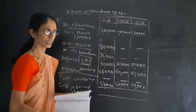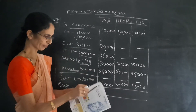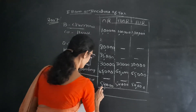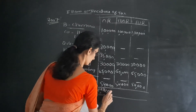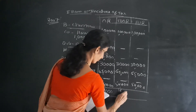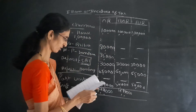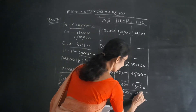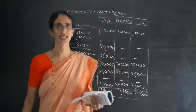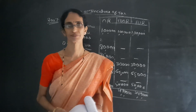Now we total the columns. The first column total is approximately 14,000; the second column total is 4,99,000; and the last column total is around 4,19,000 to 4,90,000.